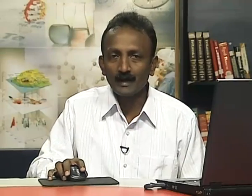We have also seen continuous casting, in which the casting is continuously made. There are three types: vertical continuous casting, horizontal continuous casting, and continuous casting in travelling mould. In continuous casting also the casting yield is 100 percent. So among the special casting processes, we have learnt centrifugal casting, investment casting, and continuous casting.